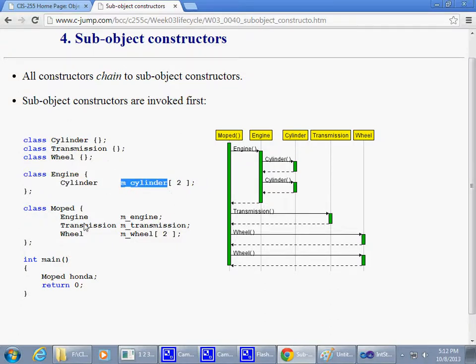and the engine happens to have like an array of two cylinders, we begin to observe by this sort of like composition of objects, that moped really is an aggregation of other objects. So this class has an object named engine, but it is a user defined class. In its own turn, this class has a cylinder, and it has an array of two cylinders.